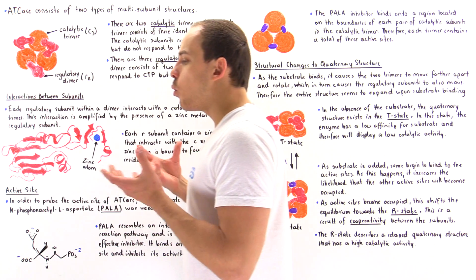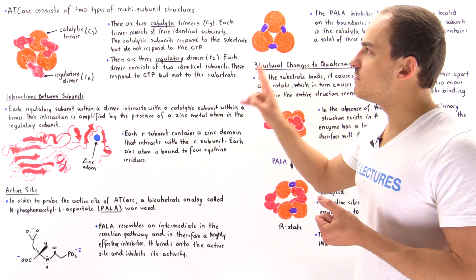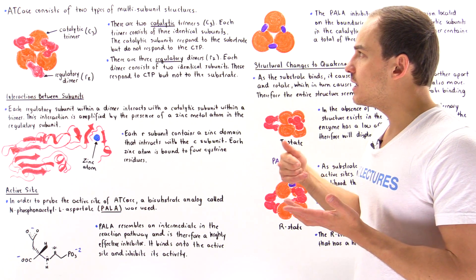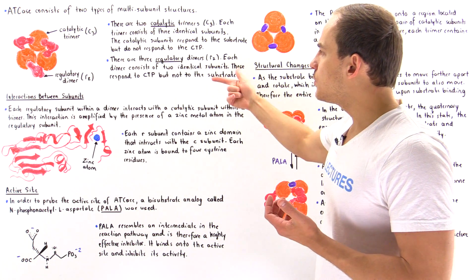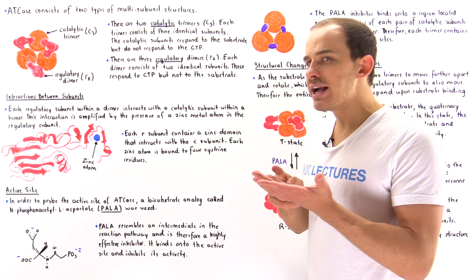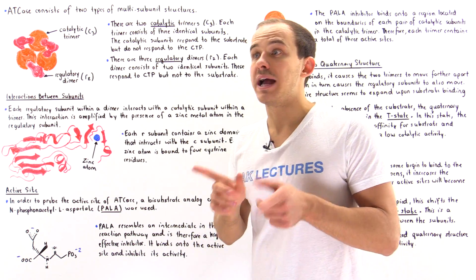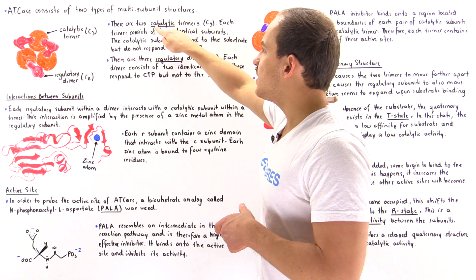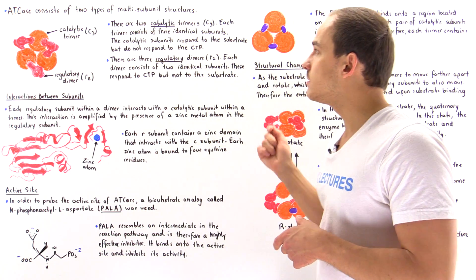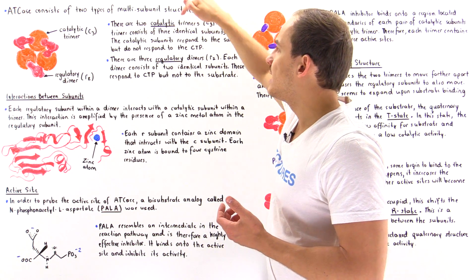This enzyme has quaternary structure, meaning it consists of multiple subunits, and there are two types of multi-subunit structures. One is called a catalytic trimer — catalytic because it contains the active sites. The other is called a regulatory dimer, where the regulatory molecule binds. Each catalytic trimer consists of three individual but identical catalytic chains, which is why we call it a trimer: C3, where C stands for catalytic and 3 stands for trimer.